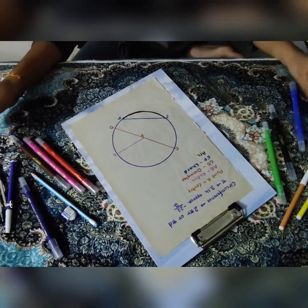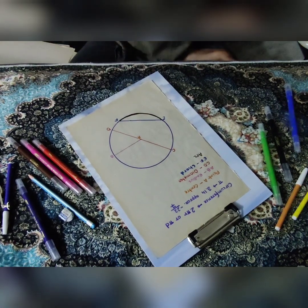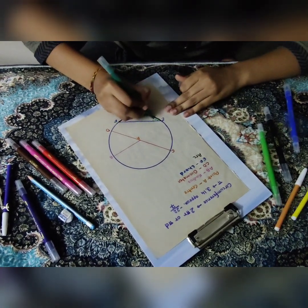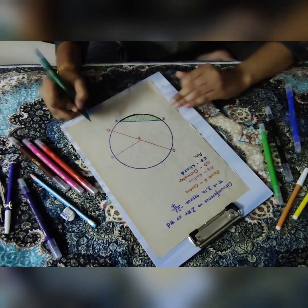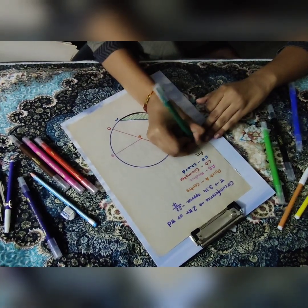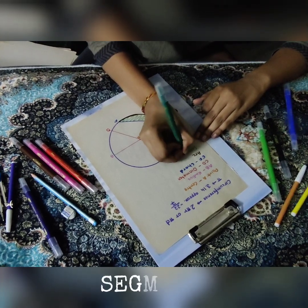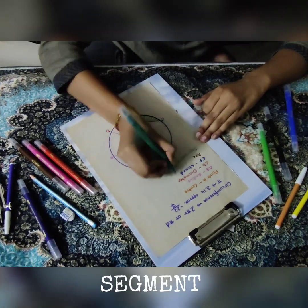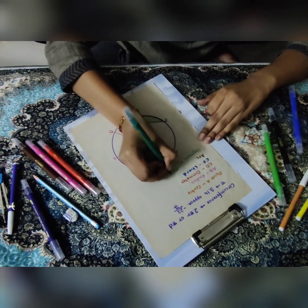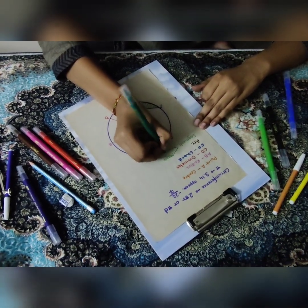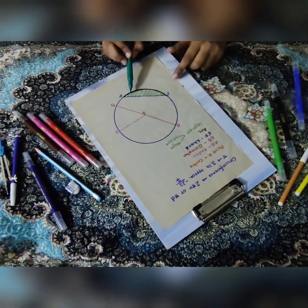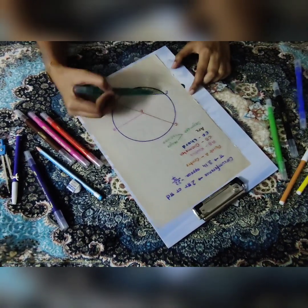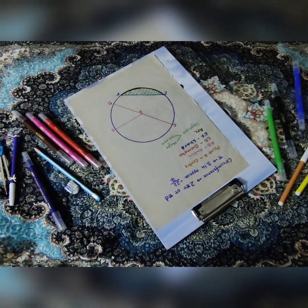The next part we have is a segment. The area covered over here between this chord and this arc, the major arc, that is our segment. Segment also has two parts, major segment and minor segment. So the smaller area that I have shaded, it's my minor segment. And the larger area, that's the major segment.